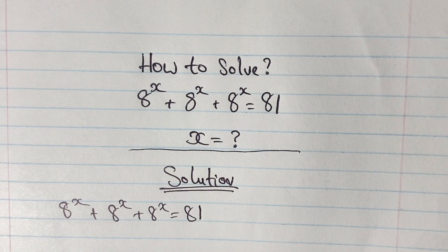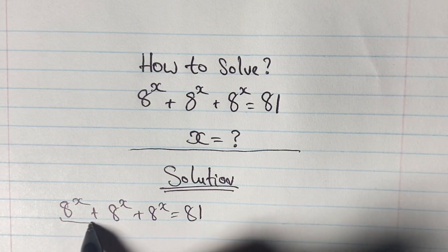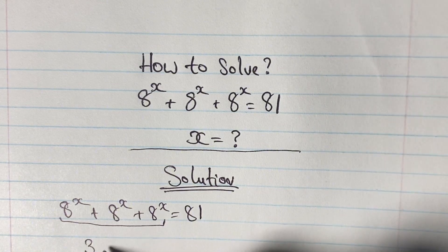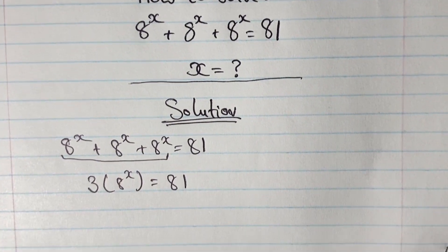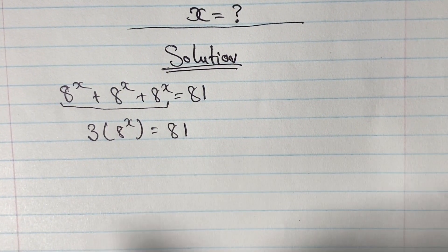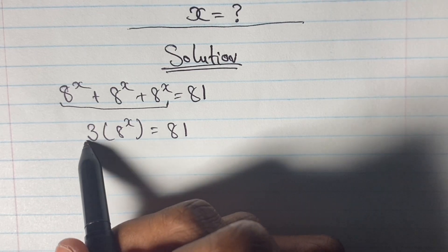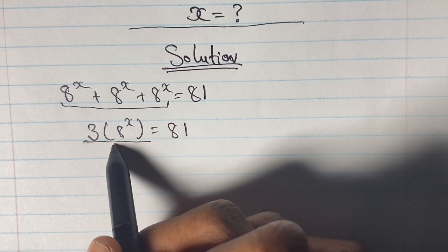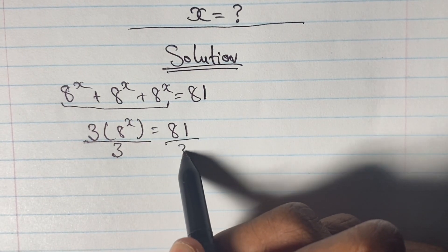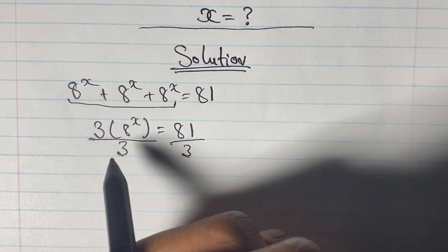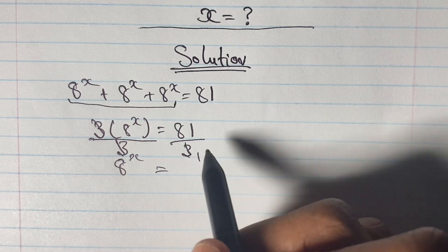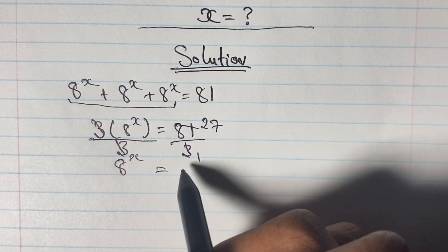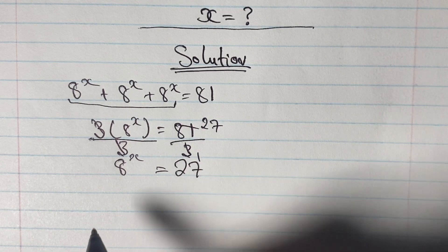We know that 8 to the power of x plus 8 to the power of x plus 8 to the power of x can be rewritten as 3 times 8 to the power of x, and that is equal to 81. In order to solve this equation we simplify further — we cancel 3 on both sides, leaving us with 8 to the power of x is equal to 81 divided by 3, which is 27.